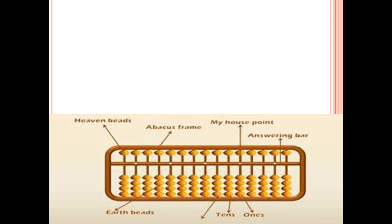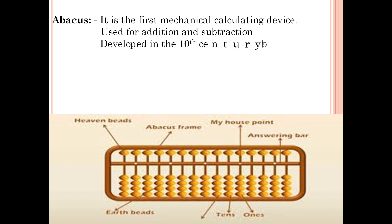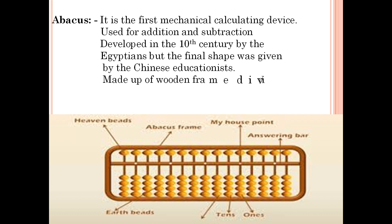Here you can see a picture of the Abacus. The Abacus is the first mechanical device used for addition and subtraction. It was developed in the 10th century by Egyptians, but the final shape was given by Chinese educators.